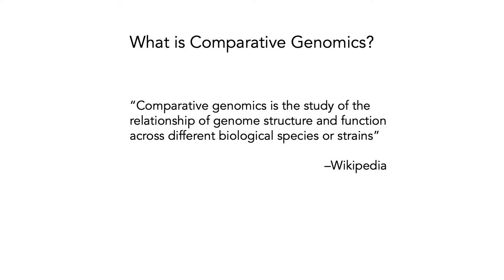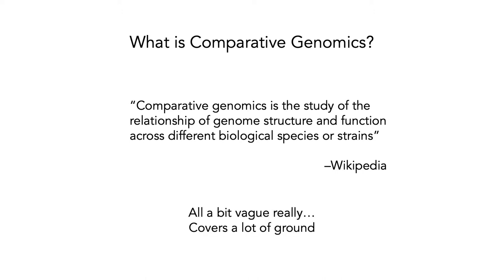If you start at the beginning and ask what is comparative genomics, you can look it up on Wikipedia, which says it is the study of the relationship of genome structure and function across different biological species or strains. That's completely true, but it's all a bit vague and certainly covers a lot of ground, so we're going to explore what exactly this means in a more practical way.